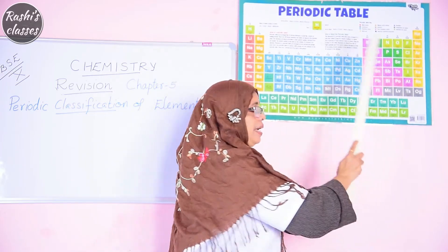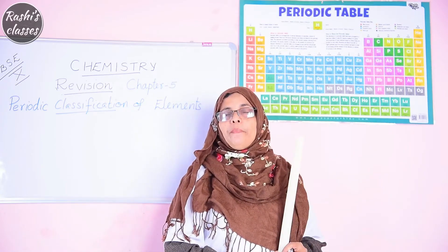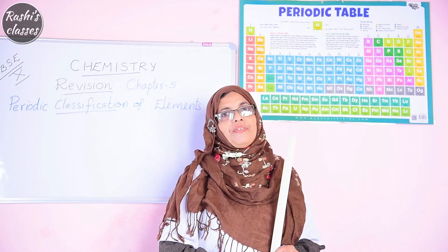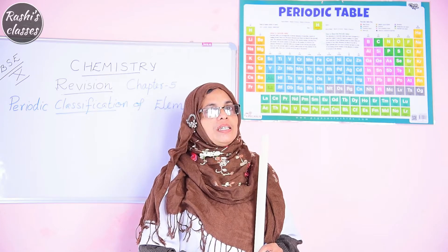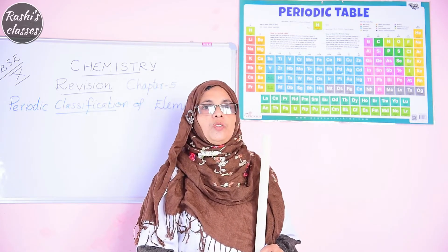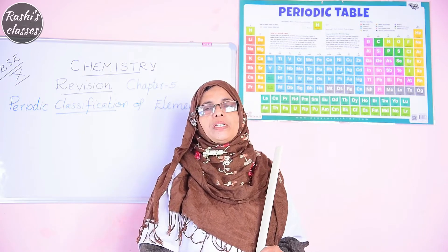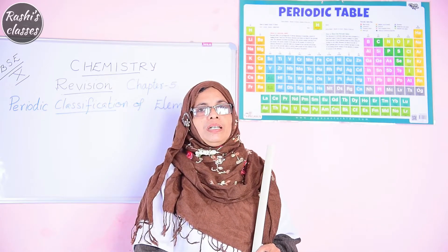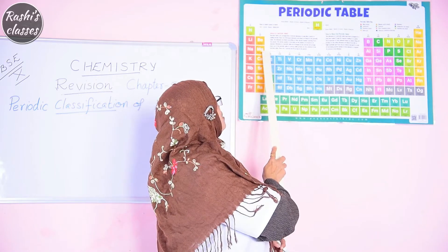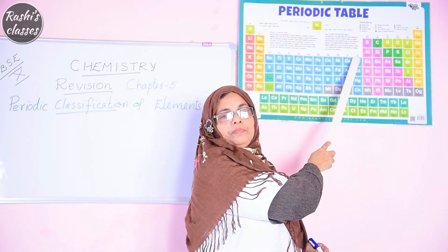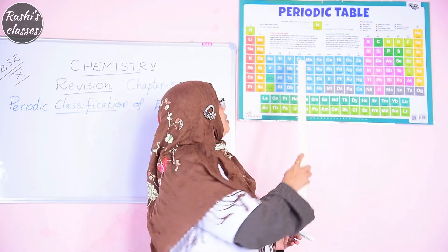Let us see the first group: hydrogen, lithium, sodium, potassium, rubidium, cesium, and francium. The first group is called alkali metals — actually hydrogen is not a metal but it is included in the first group. The second group is beryllium, magnesium, calcium, strontium, barium, and radium — they are the alkaline earth metals. The third to twelfth groups are called transition elements.